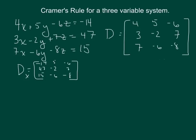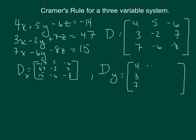Then we need to write a D sub y matrix. What happens is the x values return, so we're going to have four, three, and seven. But in this case, our y values get replaced with what the equation equals. So they're now going to have a negative six, seven, and negative eight.